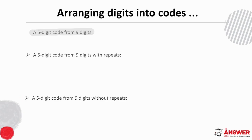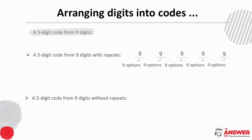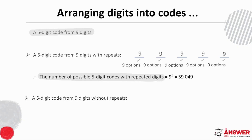Firstly, with repeats, let's place our five slots and consider the options one slot at a time. For the first slot there are nine possible options. Then because digits can be repeated, we still have nine options for the second slot, and the same thinking applies all the way through. So the number of possible five-digit codes with repeated digits is nine to the power of five, which gives us 59,049.